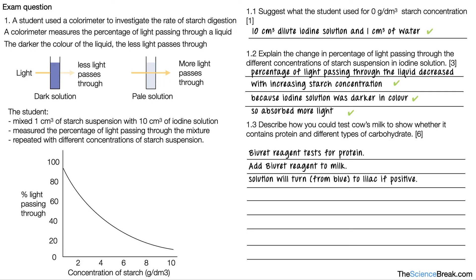So for protein, we use biuret reagent test for protein. We add the biuret reagent to the milk, and the solution will turn from blue to lilac if positive. The iodine test will test for starch, which is a type of carbohydrate.